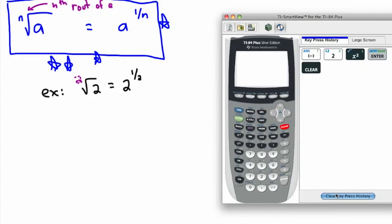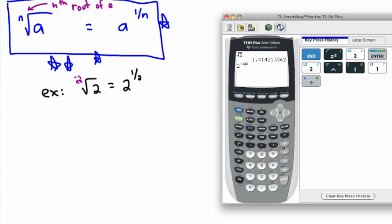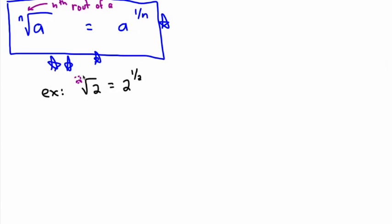We can verify this on a calculator. The square root of 2 is 1.414..., and that should be the same as 2 to the power of 1 over 2, or 0.5. So if it's not otherwise written, it's called a square root because of that stealth 2. But we don't just have to have square roots — we have lots of other kinds of roots.